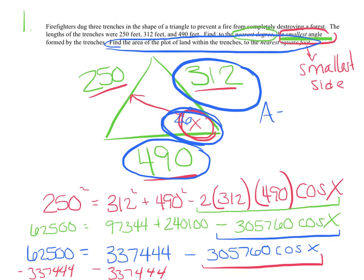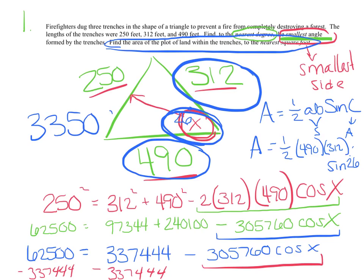So area equals, hopefully you have this one memorized as well, 1 half AB sin C. And all you had to remember is that these are your two sides, and this is your angle, as long as you have side angle side. So I have 1 half, 490 times 312 times the sine of 26 degrees. And I get an area, I'm going to stick it on the other side here, it says to the nearest square foot, 33,509 feet squared for my area.